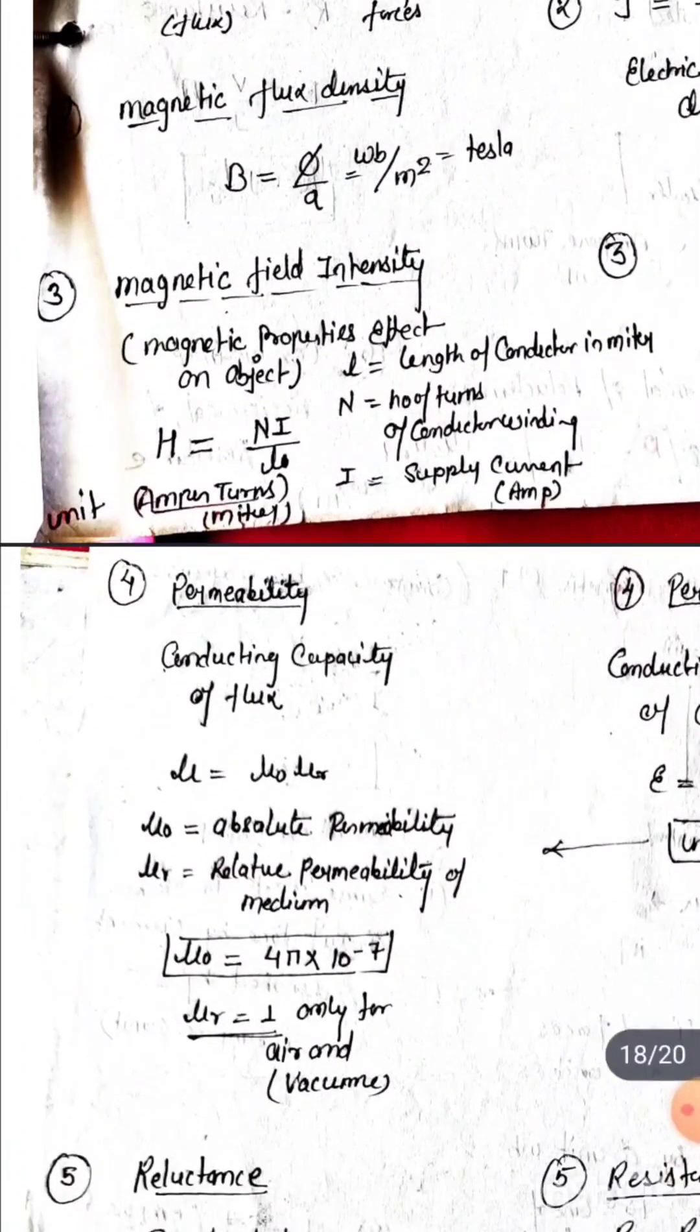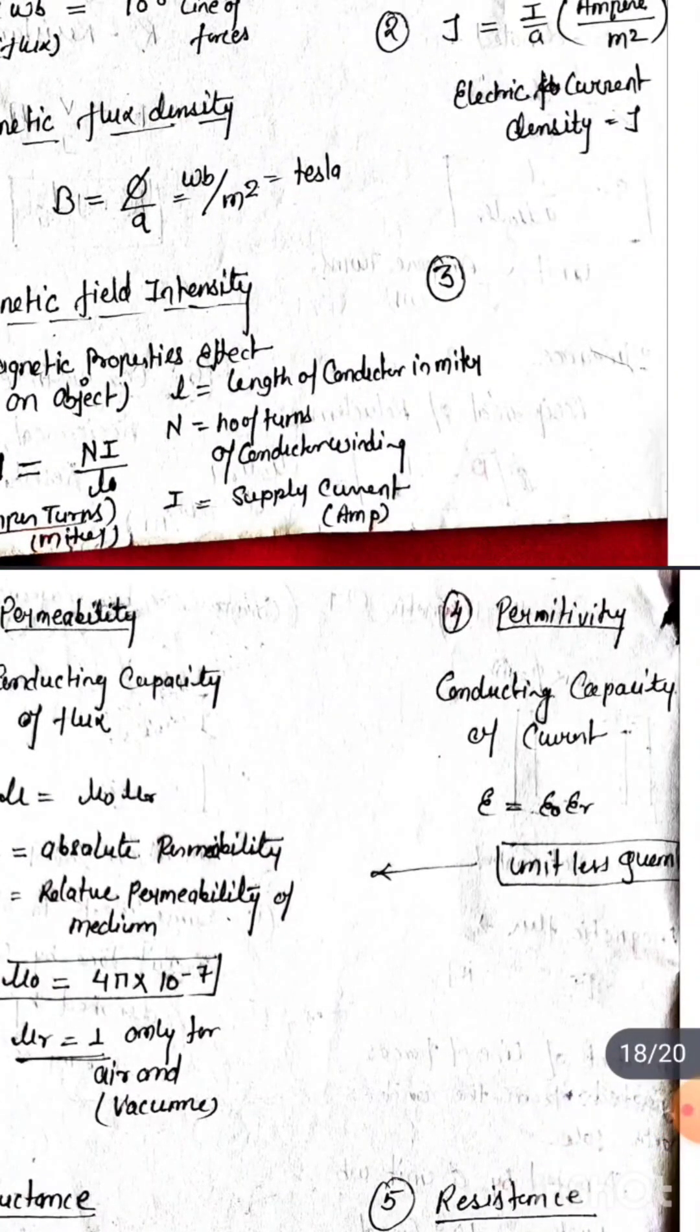In electric circuit, permeability is the conducting capacity of flux, and permittivity is the conducting capacity of current.